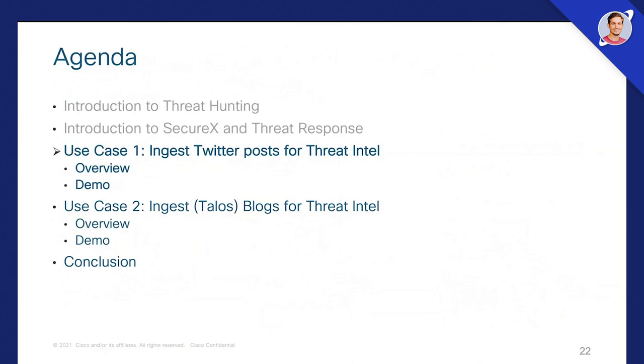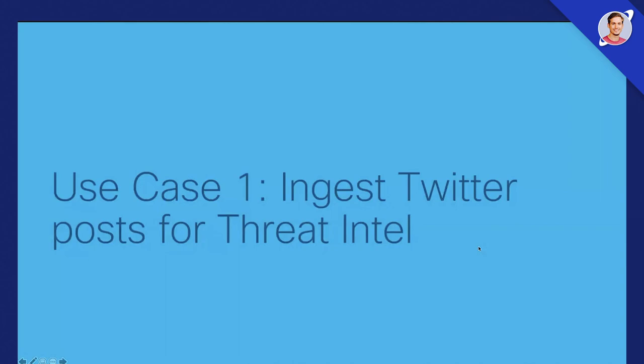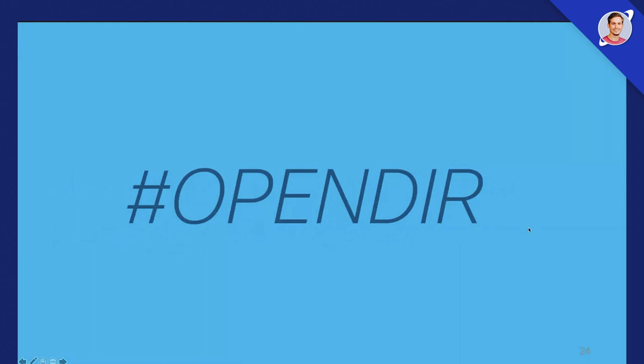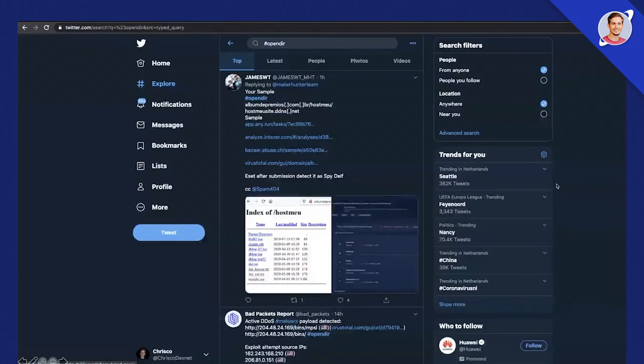Now let's dive into an actual use case combining threat hunting with SecureX. The first one is going to be Twitter. We're going to ingest Twitter to look for threat intelligence, then do automated enrichment and take some actions. Everything will be around the hashtag #OpenDeer — an interesting hashtag used by white hat or ethical hackers and cybersecurity analysts to make new research about fresh malware available to the public.